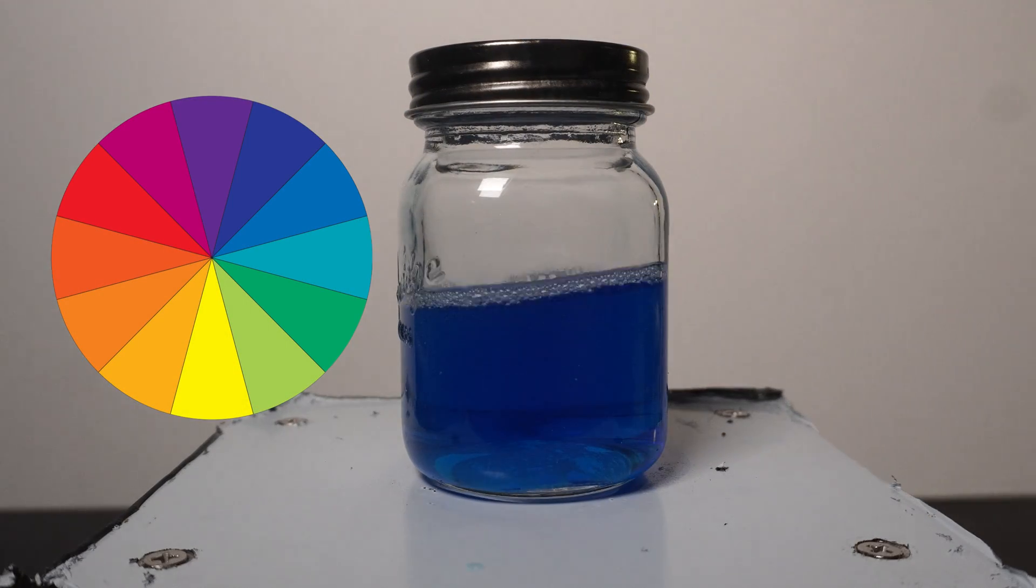For example, if there is a blue object, like our methylene blue, it is actually because all of the yellow and orange light is being absorbed by the methylene blue, only allowing the blue to be bounced back, and that's why we see a blue color.